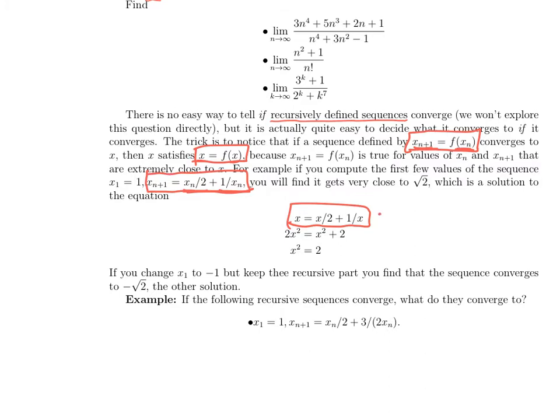How do we solve this equation? We've got some denominators over here, so we multiply by the common denominator and we get 2x² on the left is equal to 2x times x/2 is x², 2x times 1/x is 2. We subtract x², we get x² = 2. So we find the limit has to be the square root of 2 or minus the square root of 2.